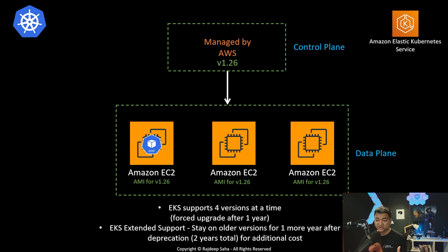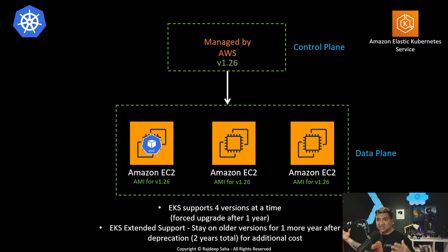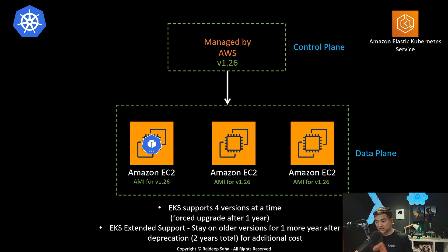With EKS Extended Support, you can stay on older versions for one more year after deprecation — so in total two years. For example, if version 1.26 just came out and you adopted it, you're good for one year. After that, EKS will no longer support 1.26, but you can sign up for EKS Extended Support and keep using it for one more year, though you will have to pay extra for it. The best practice is to always go ahead and upgrade.